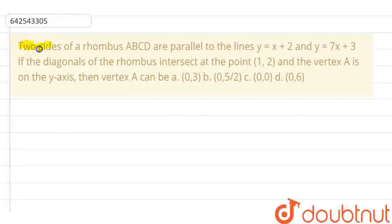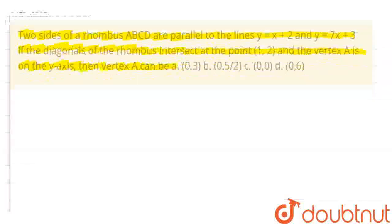Hello everyone, in this question we have two sides of a rhombus ABCD are parallel to lines y equals x plus 2 and y equals 7x plus 3. If the diagonals of the rhombus intersect at point (1,2) and vertex A is on the y-axis, then vertex A can be what? And we have four options with us.